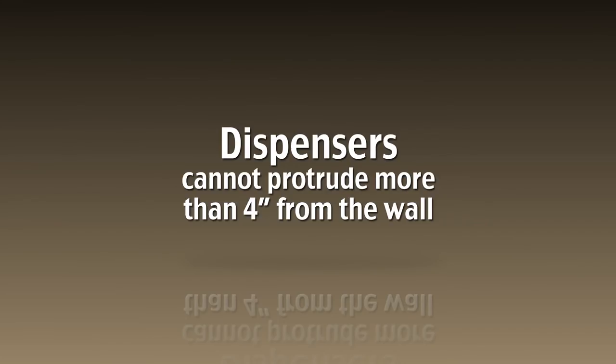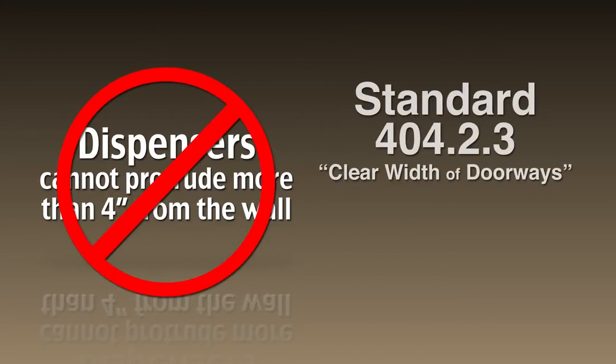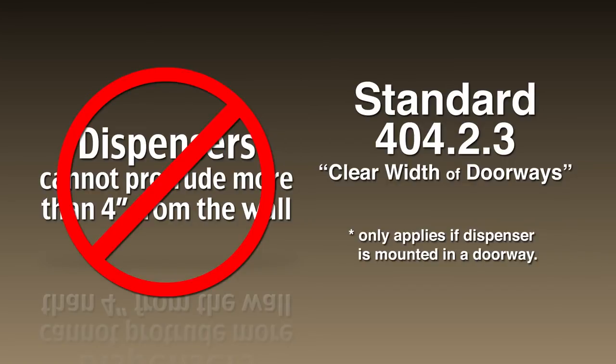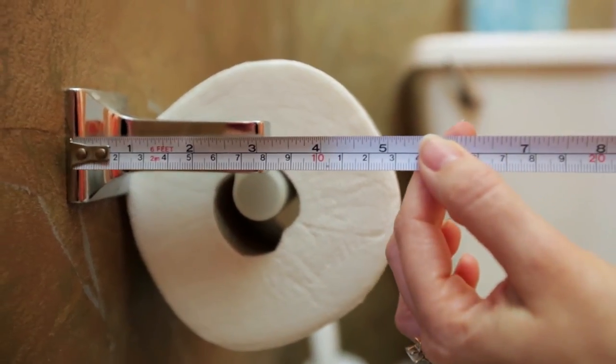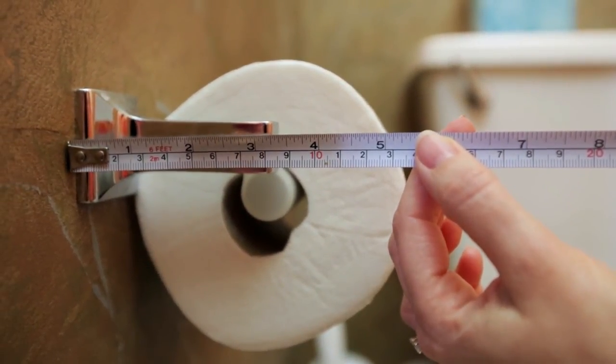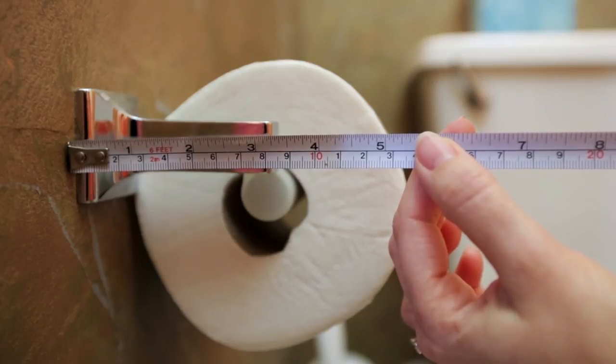Another misconception is that dispensers cannot protrude more than 4 inches from the wall. This is commonly misunderstood because this measurement is stated in ADA standard 404.2.3, clear width of doorways. However, standard 404.2.3 would only apply if the dispenser were to be mounted in a doorway. If the 4-inch protrusion were applicable, then not even a small standard household bath tissue would work because it protrudes more than 4 inches.